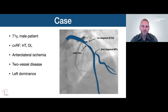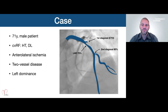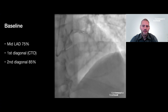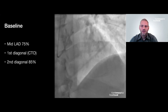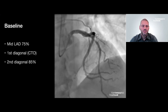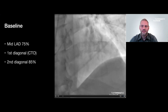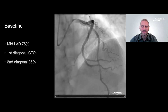I present the case of a 71-year-old male patient with hypertension and dyslipidemia. He had anterolateral ischemia based on a two-vessel disease with left dominance. The lesions present were a LAD 75% mid-lesion, a first diagonal which was chronically occluded, and a second diagonal with an osteo-high grade stenosis of 85%.